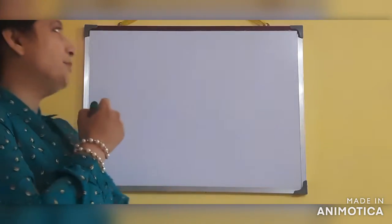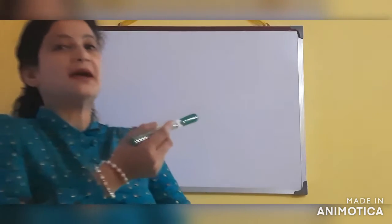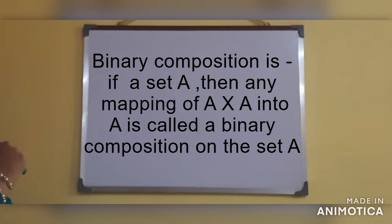But what is binary composition? Suppose there is a set of elements A, B, C, D and more. If we perform an operation on the elements of this set and get a unique result which also belongs to the set, then we say this is a binary operation. So, if we have a set A, then any mapping of A cross A into A is called a binary composition on the set A.